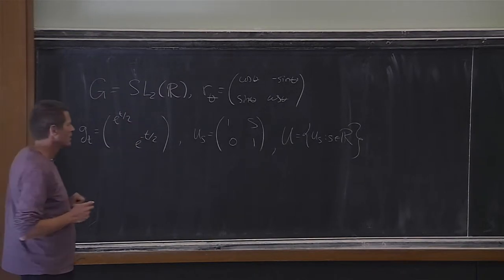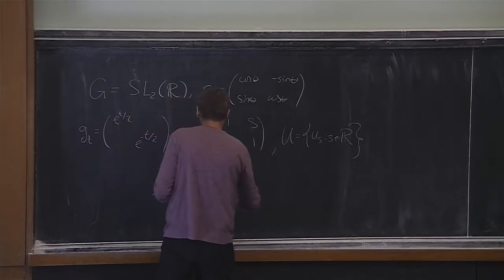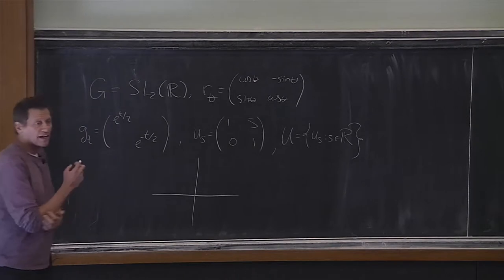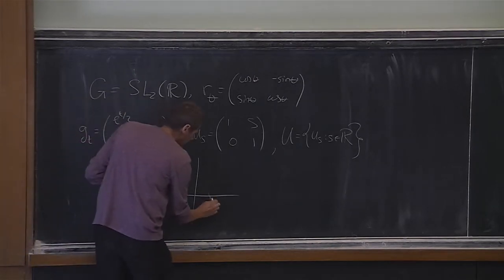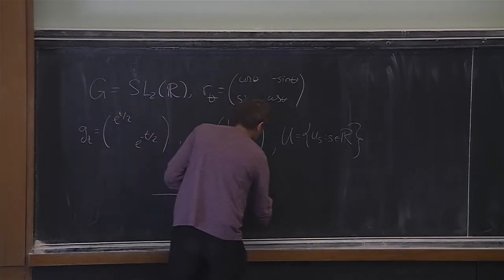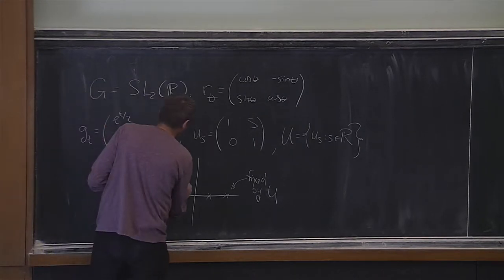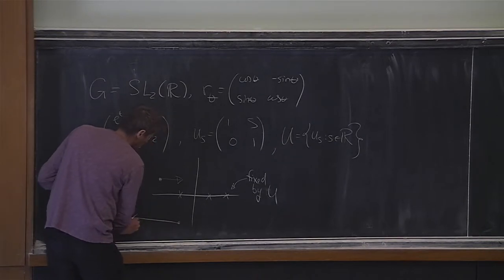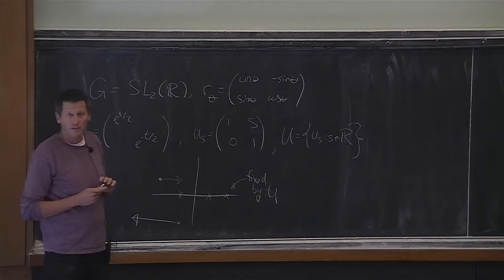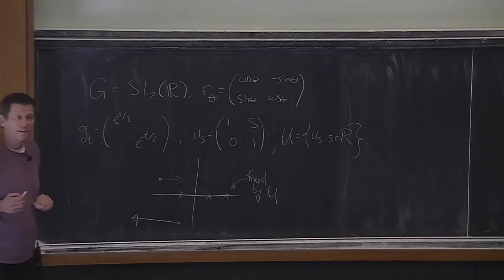Let me remind you of something very basic: how these matrices actually act on the plane. The x-axis consists of eigenvectors with eigenvalue 1 for these matrices, so all points on the x-axis are fixed by the entire group. Points above the x-axis get moved to the right, points below get moved to the left—this is called shearing. The rate at which you move depends on your height, so if you're very close to the x-axis but not on it, you move along a horizontal line at a very slow speed.